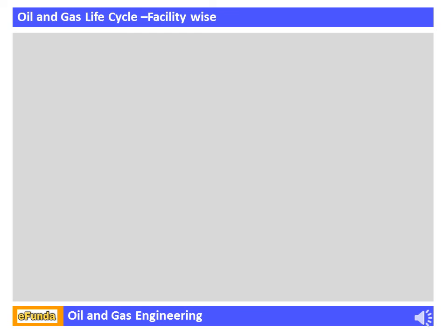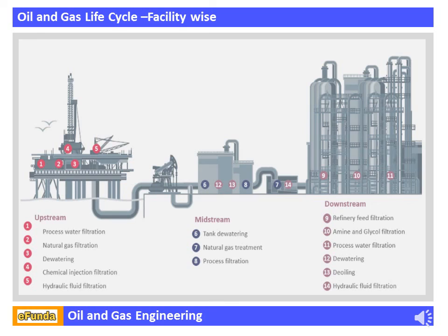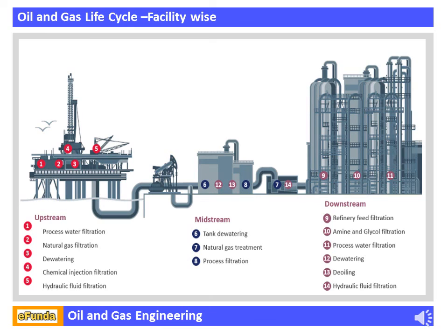The Oil and Gas life cycle facility-wise — upstream, midstream, and downstream — can be seen from the figure. Upstream processes include processed water filtration, natural gas filtration, dewatering, chemical injection filtration, and hydraulic fluid filtration. Midstream processes include tank dewatering, natural gas treatment, and process filtration. Downstream processes include refinery feed filtration, amine and glycol filtration, process water filtration, dewatering, deoiling, and hydraulic fluid filtration.